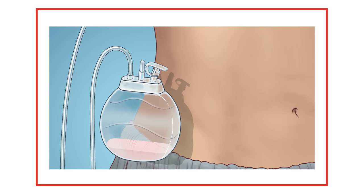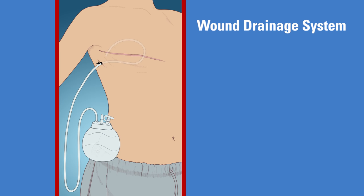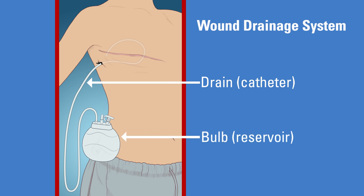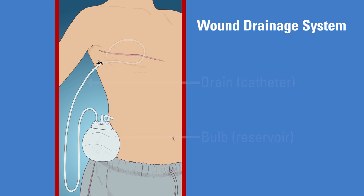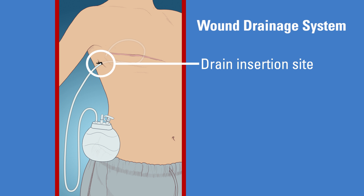In this video, you will learn the steps to care for your drain, as well as the dressing covering the area where the drain enters your skin. Your wound drainage system consists of tubing, also called a catheter or drain, and a reservoir at the bottom of the tube, also called a bulb. The wound catheter is referred to as the drain and the reservoir as the bulb. The drain tubing is placed inside the wound by your surgeon and is secured to the skin outside of the wound with a suture or stitch. This area where the drain enters and is stitched to your skin is called the drain insertion site. The bulb provides gentle suction, which helps draw fluid from the wound inside.